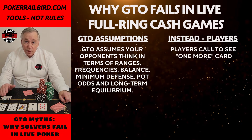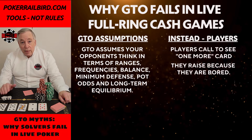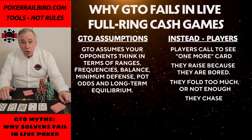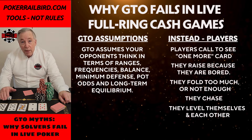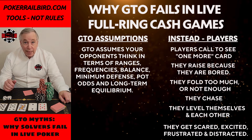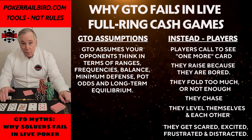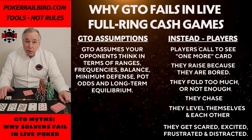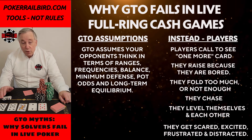Players call just to see one more card. They raise because they're bored. They fold because the last hand rattled them. They chase because they're tilted. They level themselves. They level each other. They get scared, excited, frustrated, distracted. None of that fits the model. And the moment one opponent deviates from equilibrium — even slightly — the entire solver structure collapses.